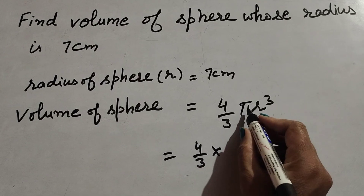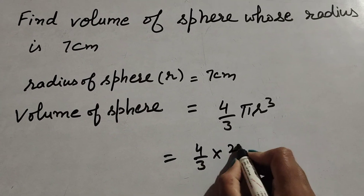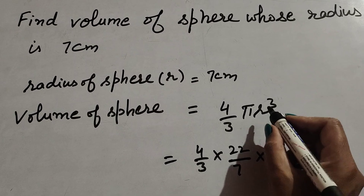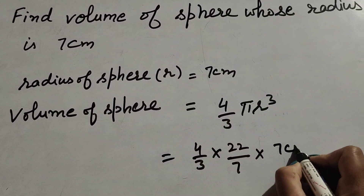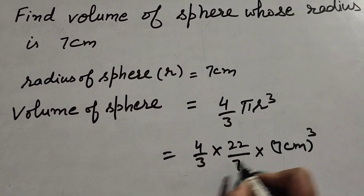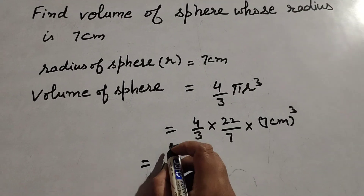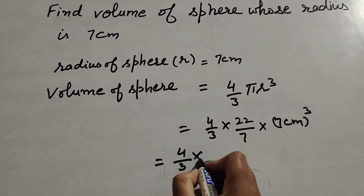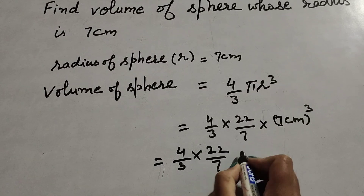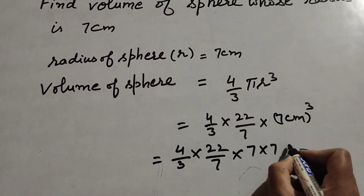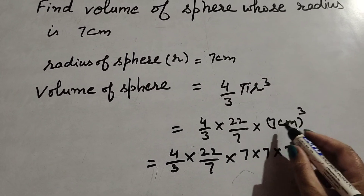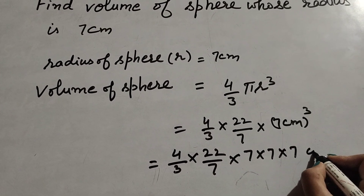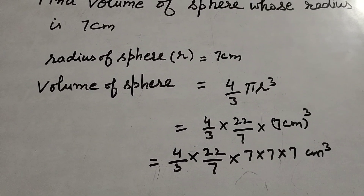Substituting values: pi is the constant 22 over 7, and r is the radius 7 centimeters cubed. So it equals 4 over 3 multiplied by 22 over 7 multiplied by 7 raised to the power 3, which is 7 multiplied by itself 3 times.